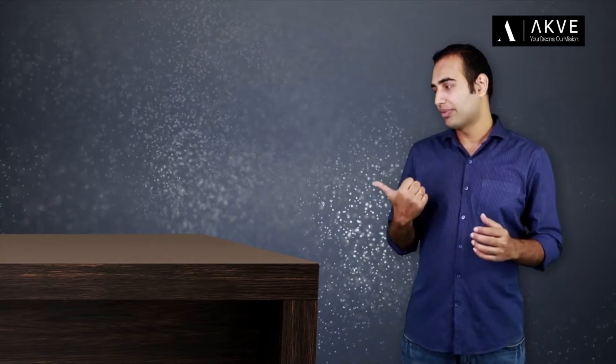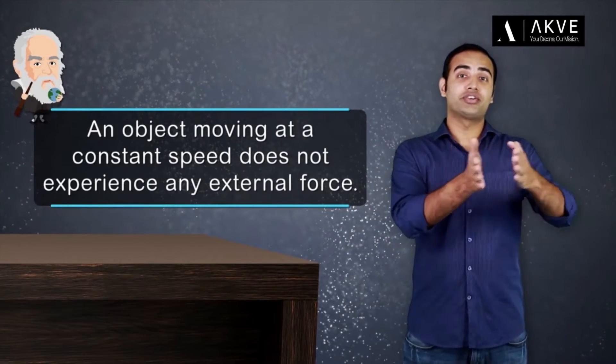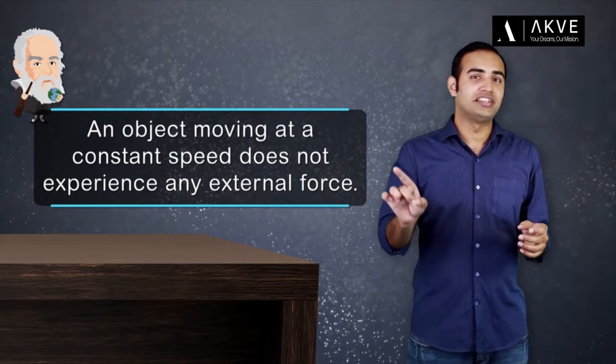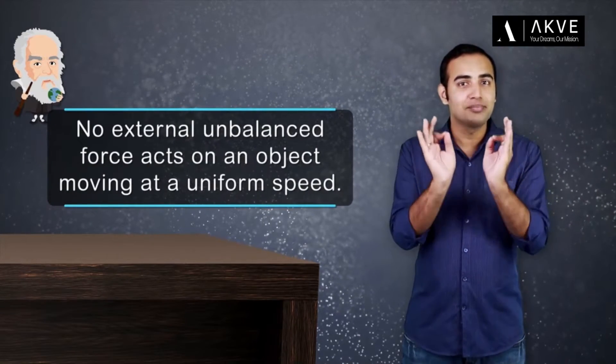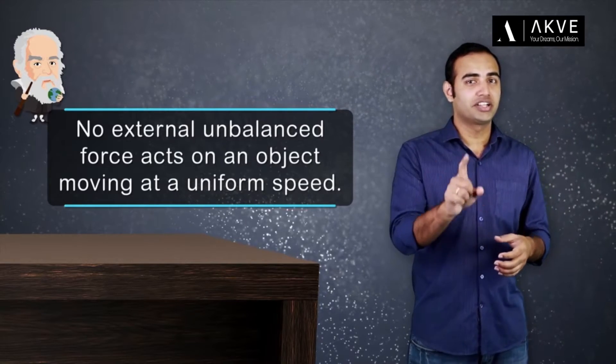After conducting similar experiments like this, Galileo concluded that an object moving at a constant speed does not experience any external force. Or in other words, no external unbalanced force acts on an object moving at a uniform speed.